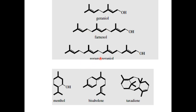Geranylgeraniol is formed from four isoprene units, also by head-to-tail attachment, and is the precursor of all diterpenes. Farnesol is the precursor of all sesquiterpenes. In addition to these acyclic monoterpenes, we have cyclic monoterpenes — for example, menthol, which is formed from two isoprene units.